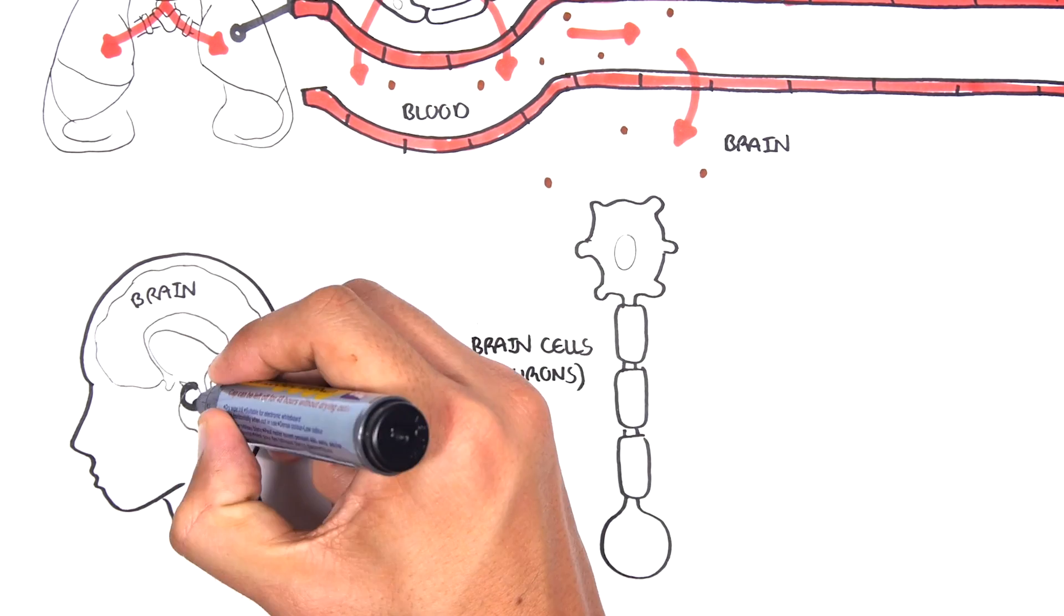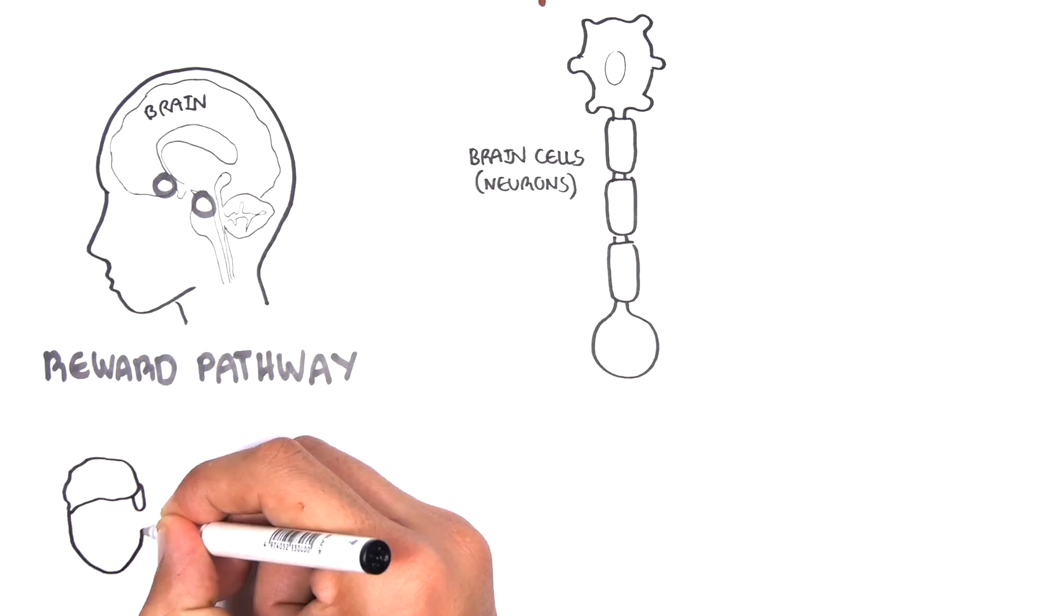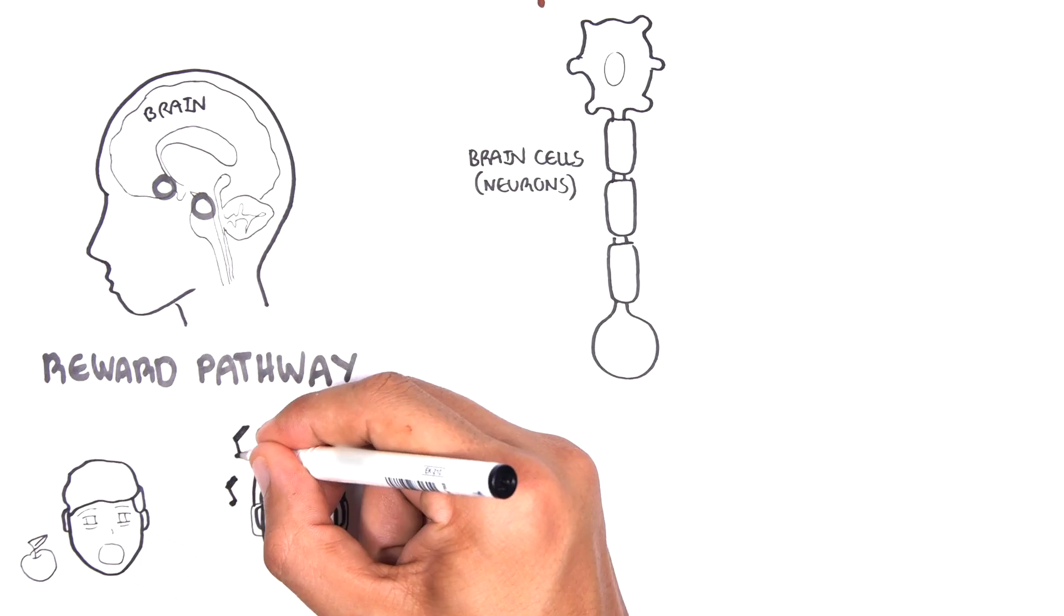Nicotine affects a pathway in the brain called the reward pathway. The reward pathway is a normal and important part of our survival. It's an area of the brain that makes us feel good when we do something we enjoy.